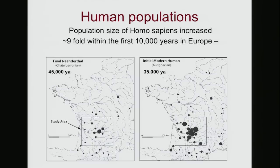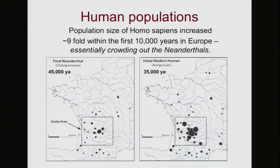It now seems that besides our interbreeding a bit with the Neanderthals, what really led to their extinction was the fact that we crowded them out. We were much more successful at producing surviving offspring in Europe than were the Neanderthals.